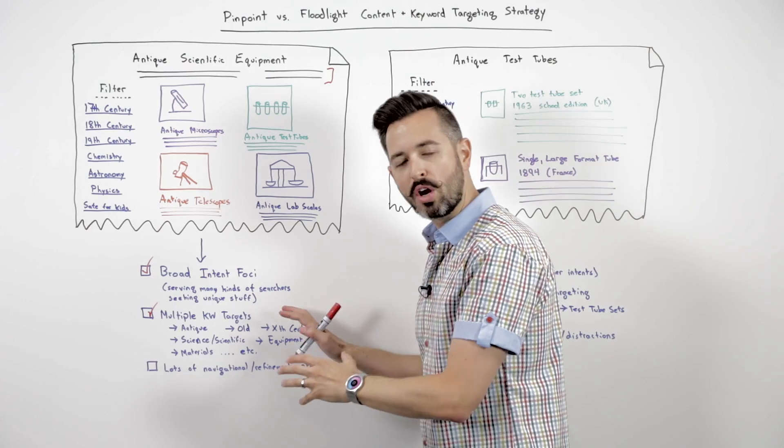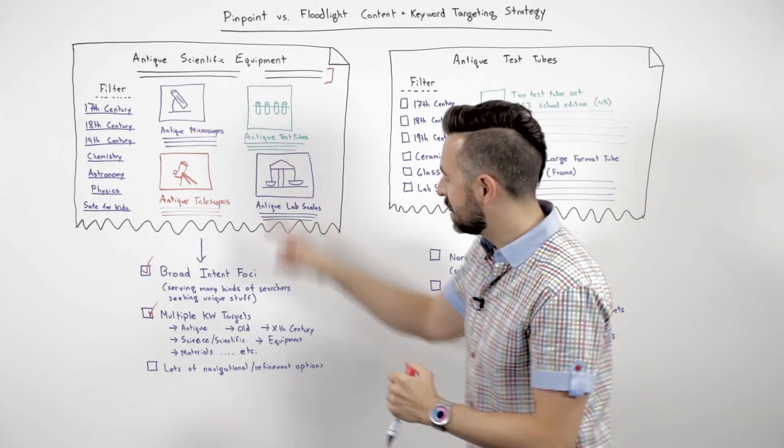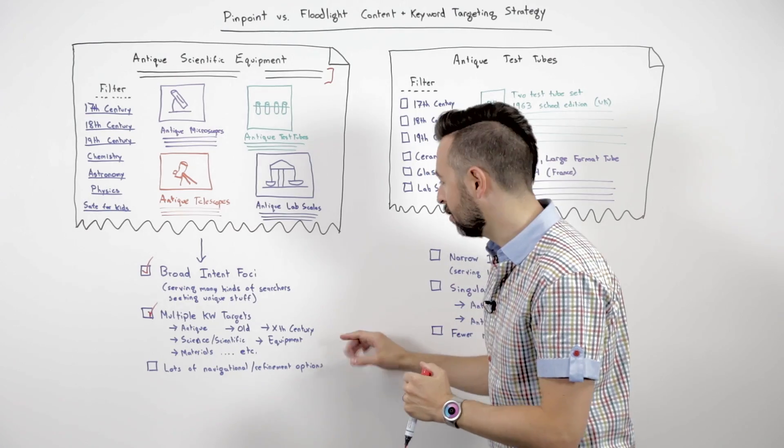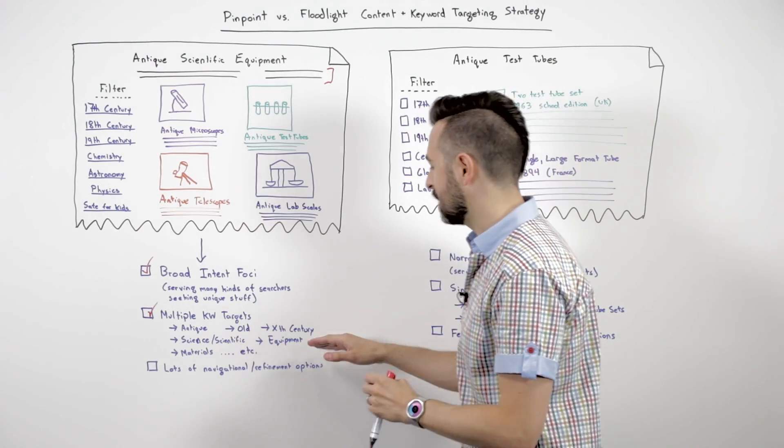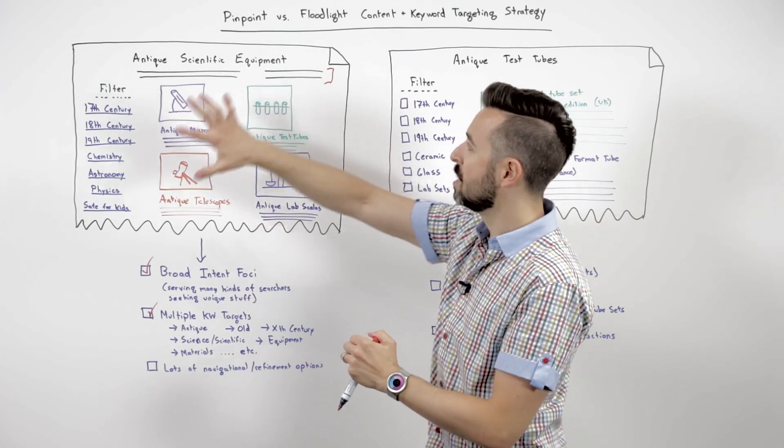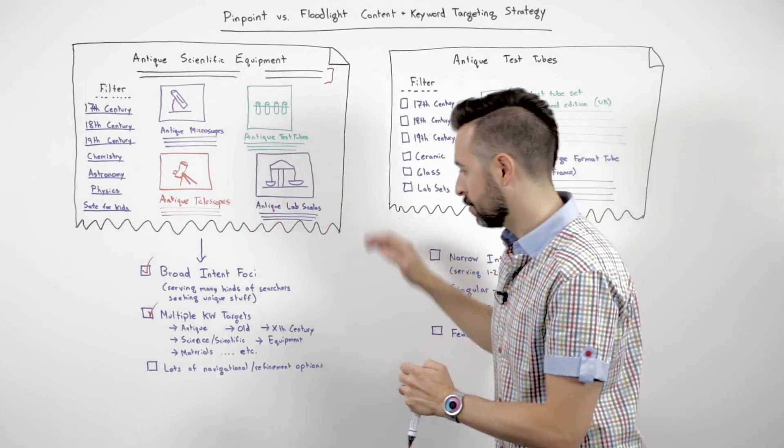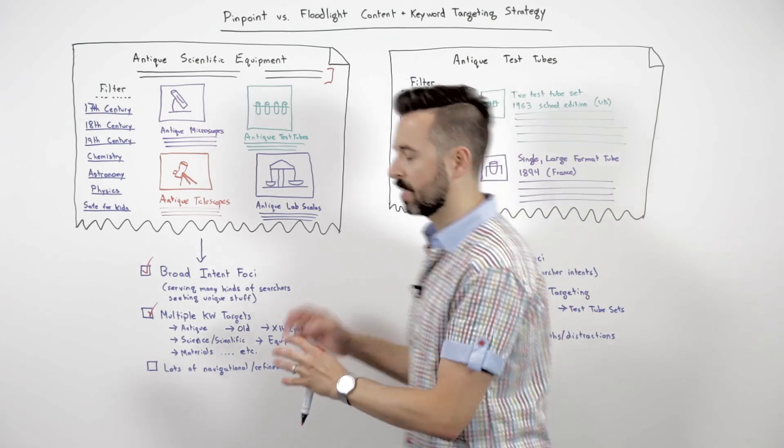And then different types of stuff at a very broad level. So I can go to microscopes or test tubes, lab searches. This is great because it's got broad intent foci serving many different kinds of searchers with the same page because we don't know exactly what they want. It's got multiple keyword targets so that we can go after broad phrases like antique or old or historical or 13th, 14th century, science and scientific equipment, materials, labs, et cetera. This is a broad page that could reach any and all of those. And then there's lots of navigational and refinement options once you get there.